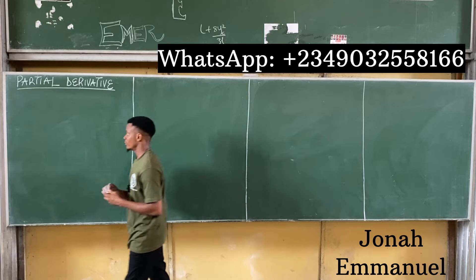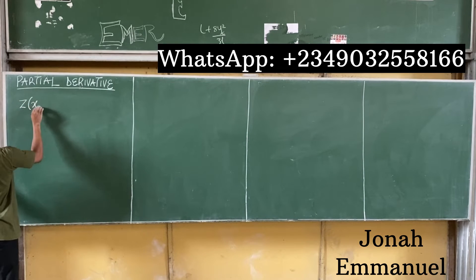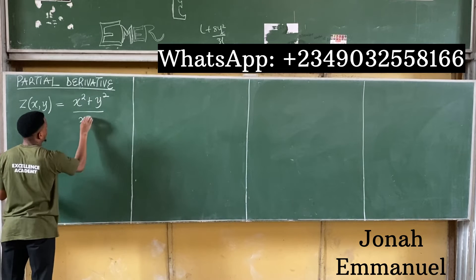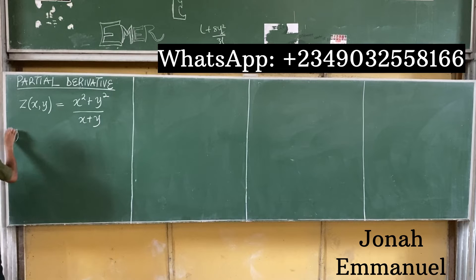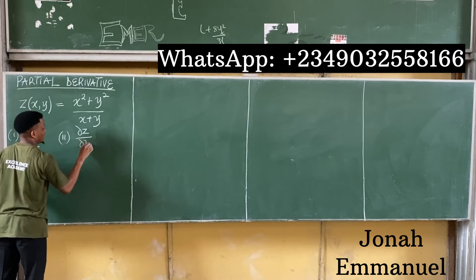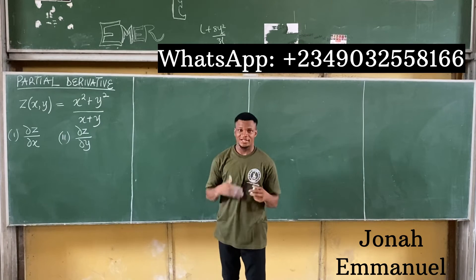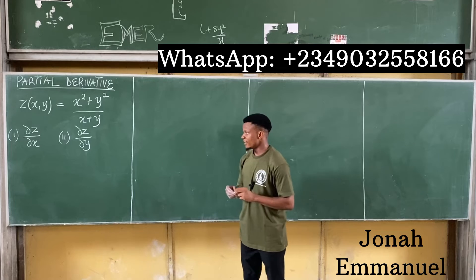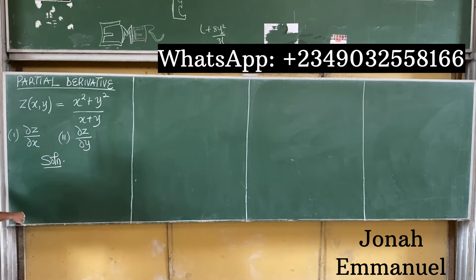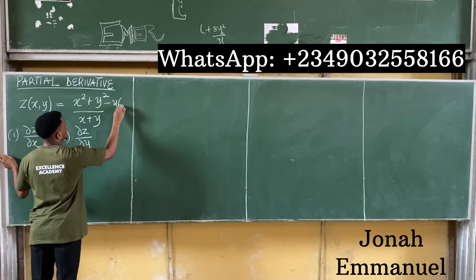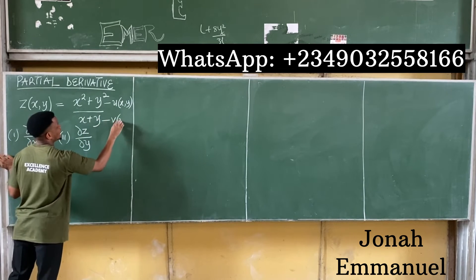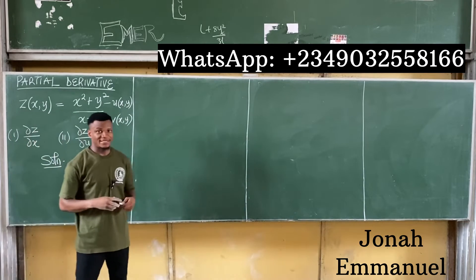Let's try an example. Let z equal (x² + y²) / (x + y). We are asked to find ∂z/∂x and ∂z/∂y. In this question, let's call u(x,y) = x² + y² — the numerator — and v(x,y) = x + y — the denominator — since both are functions of x and y.